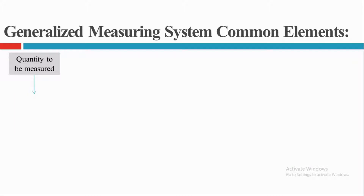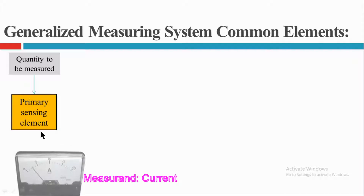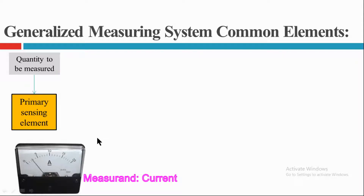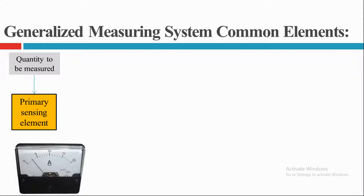The quantity to be measured first touches the primary sensing element. Let's take an ammeter as an example for better understanding. Here the measurement is current — a physical quantity or property which is going to be measured. We are going to measure the current with the help of a coil, which is the primary sensing element in the instrument.